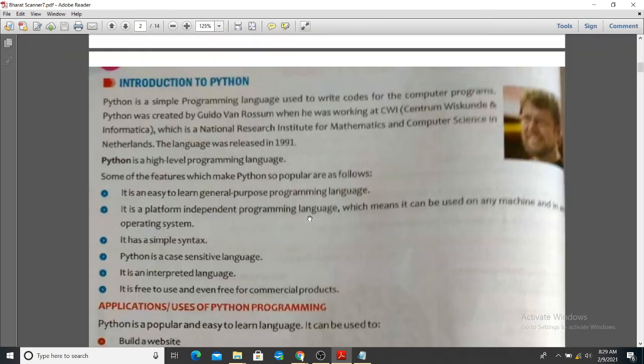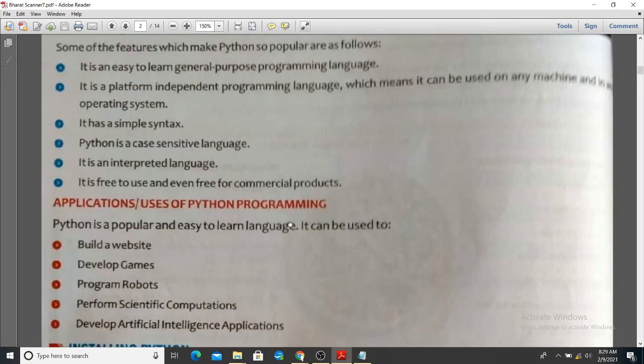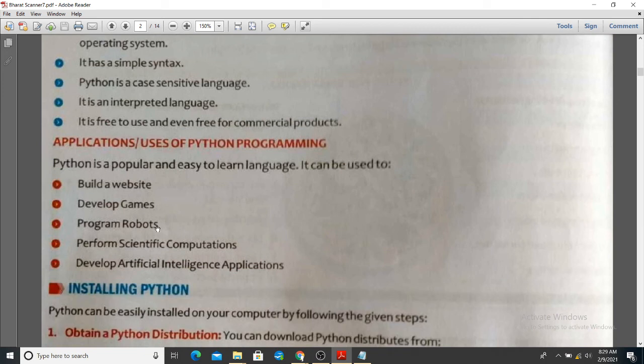With Python's help, we can design games, we can design software. These are the applications we discussed. Build a website, develop games, program robots, program specific computations. There are so many uses of Python. Data science for Python use of that. So thank you for watching this video. Thank you.